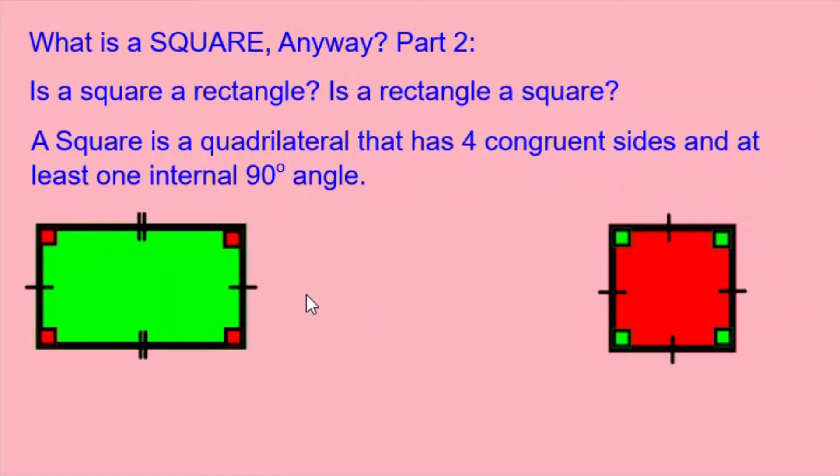Now, is a rectangle a square? A rectangle has the four internal 90 degree angles. But it doesn't necessarily have four congruent sides. Instead it has two pairs of congruent sides.